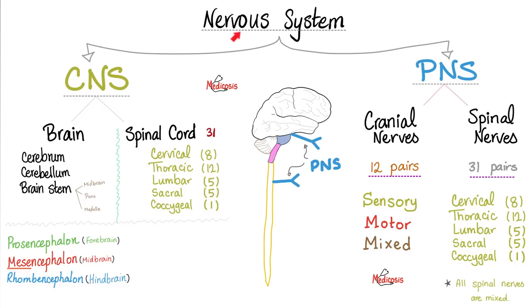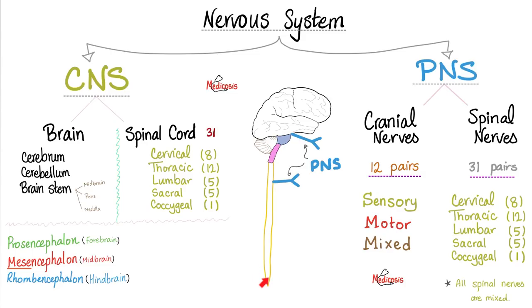The nervous system is subdivided into the central nervous system and peripheral nervous system. The central nervous system consists of the brain and the spinal cord. The spinal cord is subdivided into many regions: the cervical region with eight spinal segments, the thoracic region with 12, the lumbar region with five, the sacral region with five sacral segments, and just one coccygeal segment.